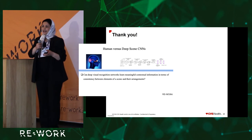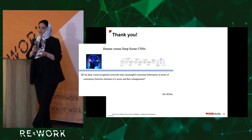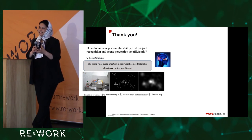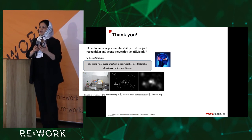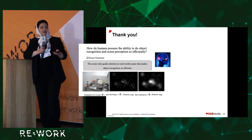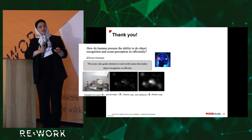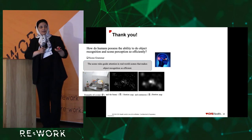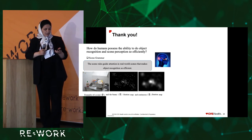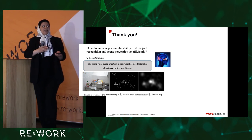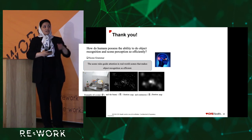Scene grammar means we have learned the rules of the world, much like we have learned the rules of our mother tongue. This learning is not explicit but achieved through constant interaction with our environment. For example, we expect a glass to have a surface to rest on — that is a syntactic rule — while the semantic rule is that the glass is consistent with the scene. An object that violates both rules does not follow scene grammar. Scene grammar helps humans guide their attention in real-world scenes, making object recognition efficient.